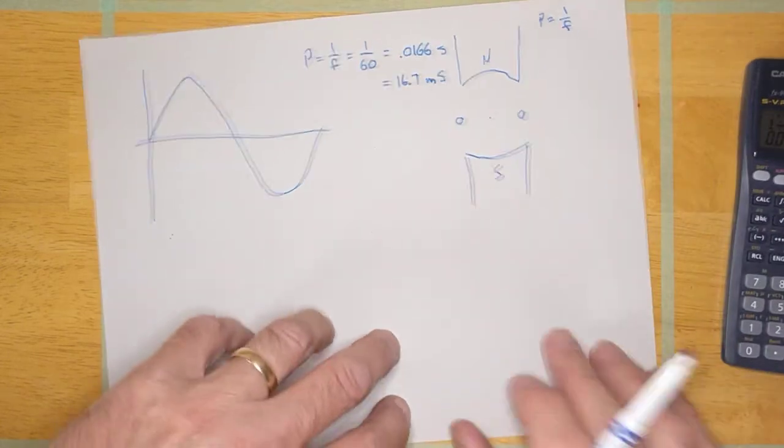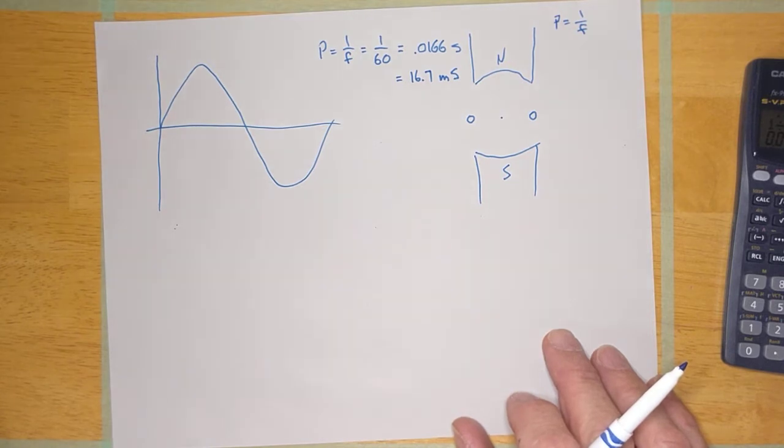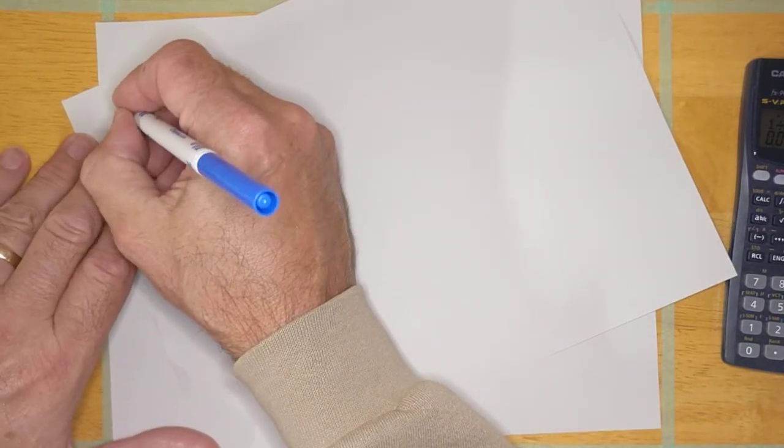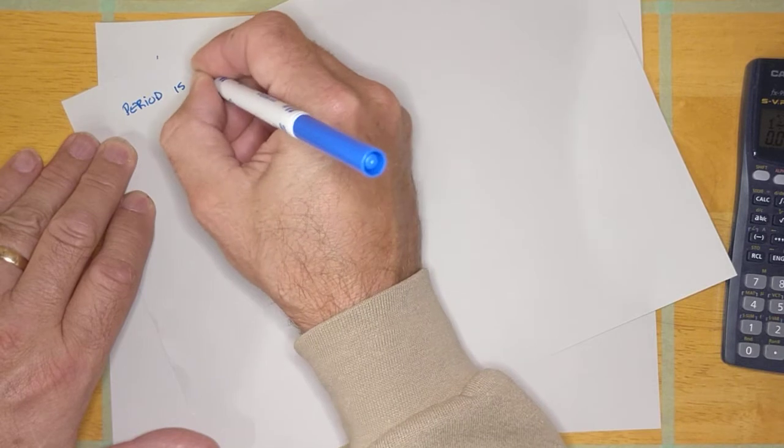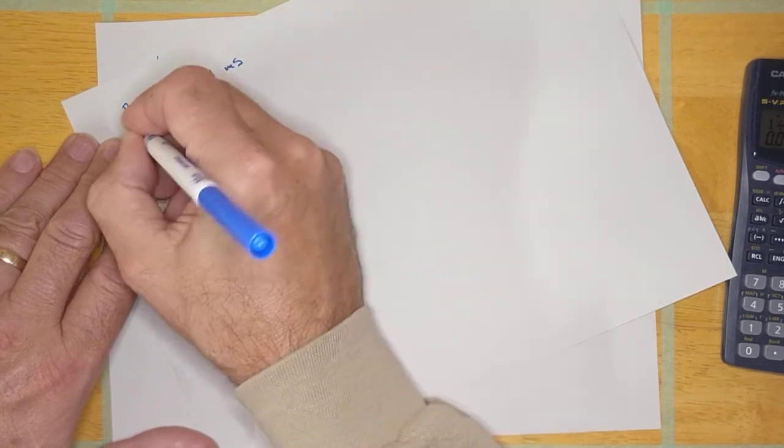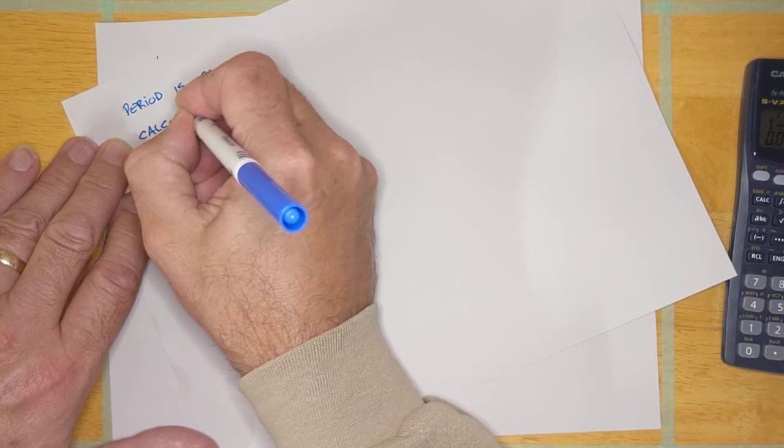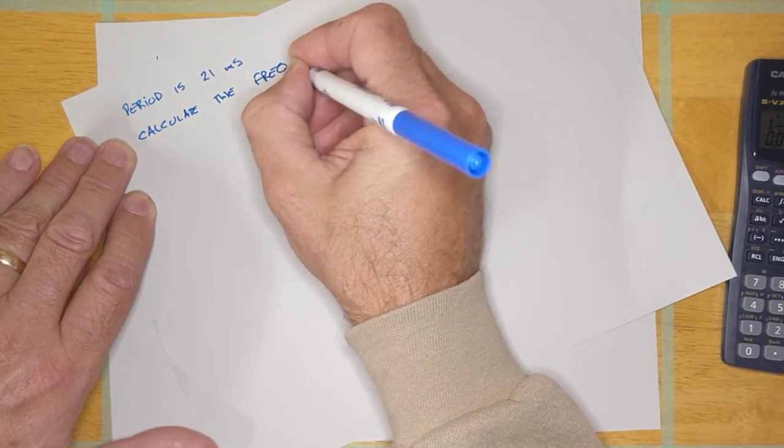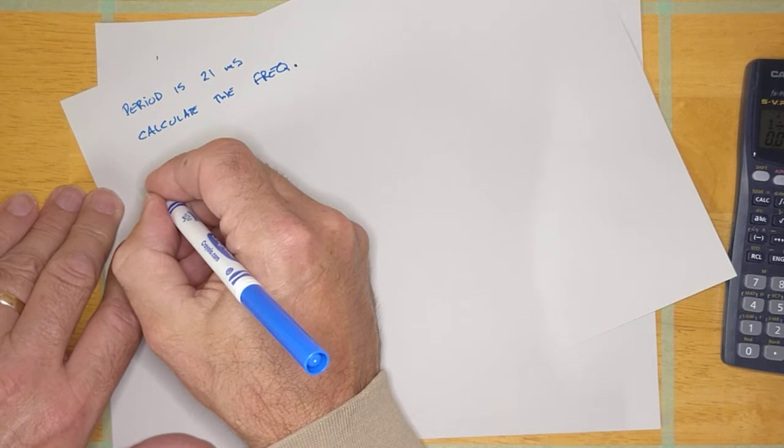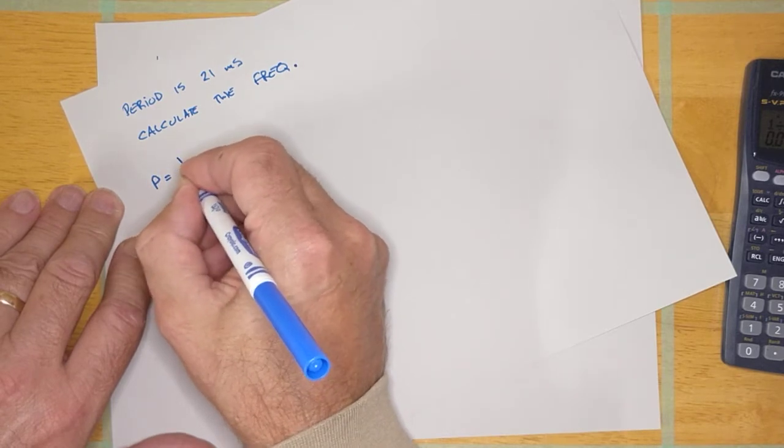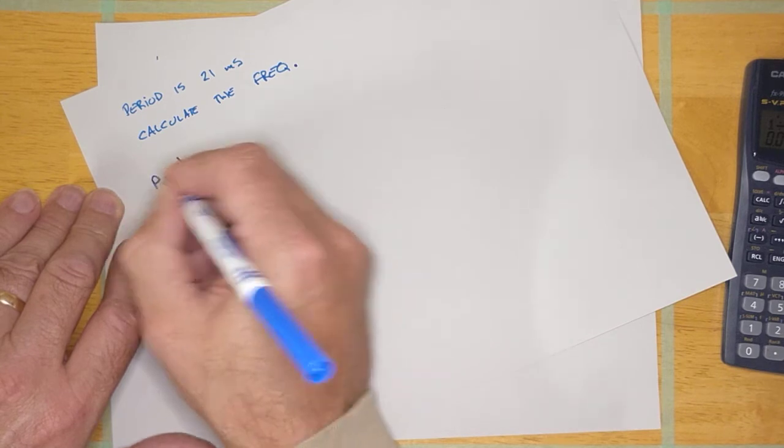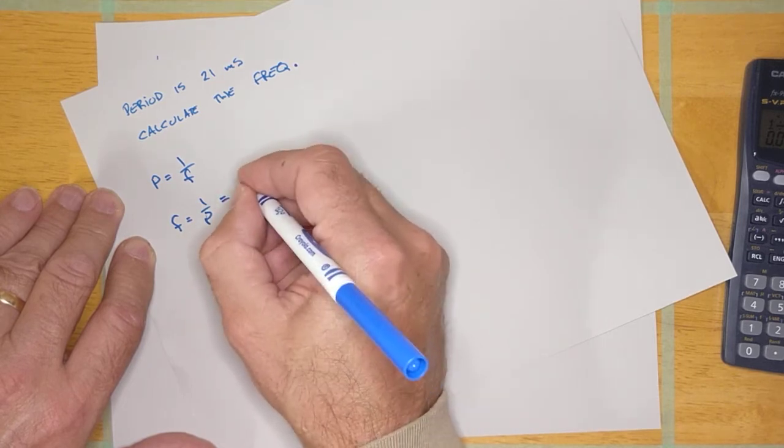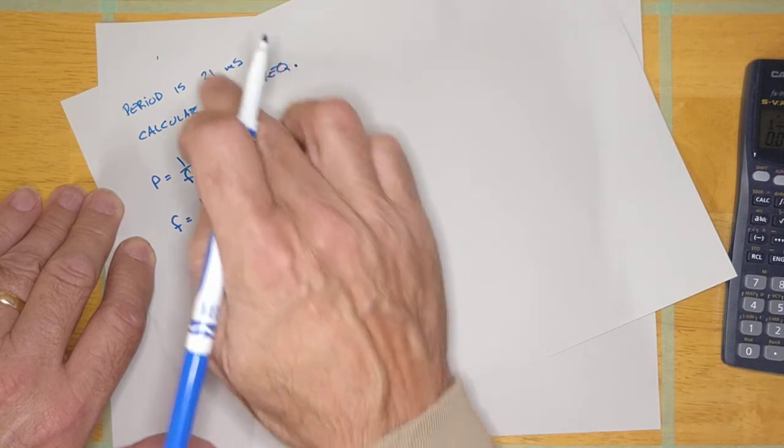For example, here, let's do an example here. I got another piece of paper here. Give me a second here. Let's just say I say the period is 21 milliseconds. Calculate the frequency. All right, so let's do this for a second. I know my formula is the period is equal to 1 over the frequency. If I transpose that, it ends up being the frequency is 1 over the period, which means it's 1 over 21 milliseconds, but the period has to be in seconds.